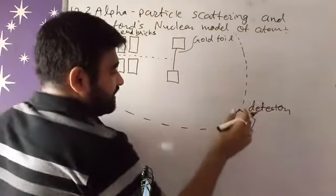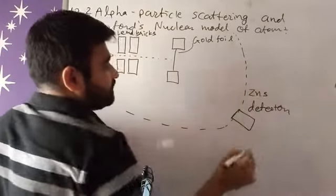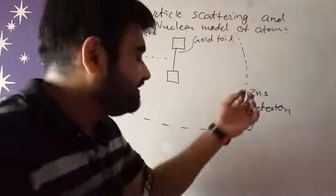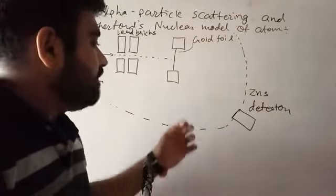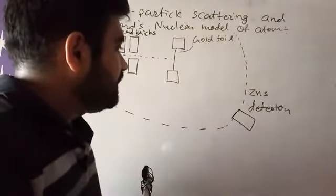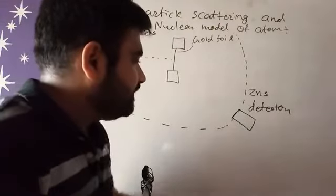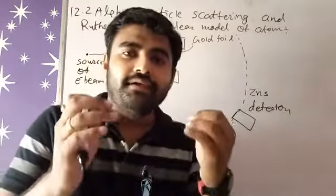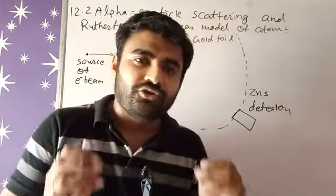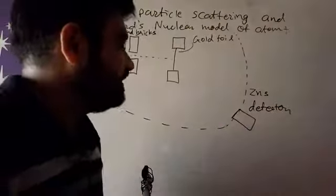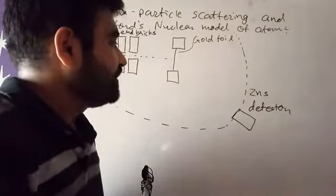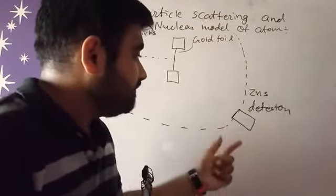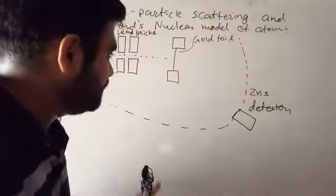So detector which is made up of ZnS screen. Why we use zinc sulfide? Because whenever electrons emit on the surface it will glow. So that's why we can see that electrons are emitted on this surface. We can detect that electron. Right? So we use ZnS screen for the detection of electrons.